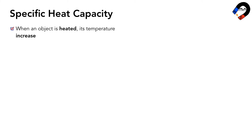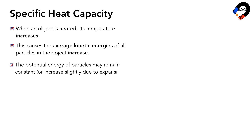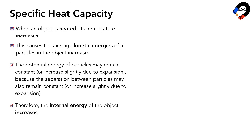When an object is heated, its temperature increases. This causes the average kinetic energies of all particles in the object to increase. The potential energy of particles may remain constant or increase slightly due to expansion, because the separation between particles may also remain constant or increase slightly. Therefore, the internal energy of the object increases. This internal energy is also known as the thermal or heat energy.